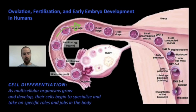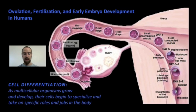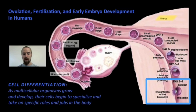As it travels through the fallopian tube, this zygote begins to go through the cell cycle — growing, replicating its DNA, and eventually dividing through a combination of mitosis and cytokinesis. From one cell to two, from two cells to four, then eight, and so on. Eventually, this ball of cells that we call an embryo reaches the uterus, and if conditions are right, it will implant itself into the uterine wall, integrating itself with the mother so that the mother can nurture this developing organism using her own body systems.